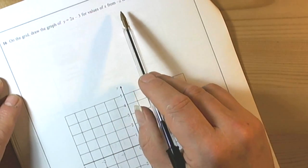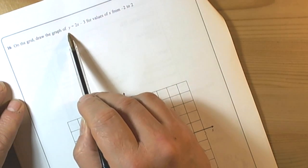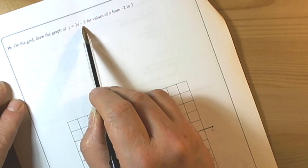We just need 3 coordinates, so we need to calculate some values. They've given us a rule here that to get the y number we double the x number and take away 3.